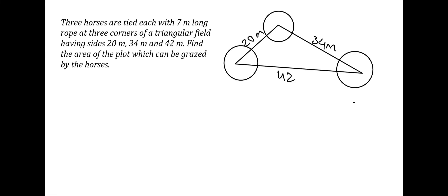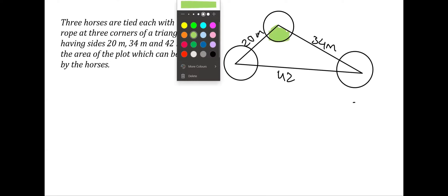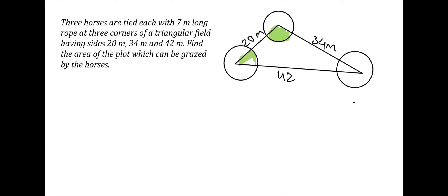It cannot graze the whole circle since the grass is only present inside the triangular field. So the area it can graze will be only these sectors. The radius is seven at each corner — this is seven, this is seven, and this is seven. I'll name the triangle as A, B, C, and apply the area of a sector formula. The required area will be the area of three sectors.